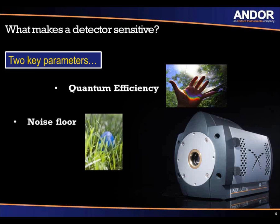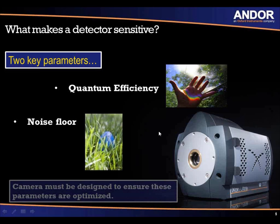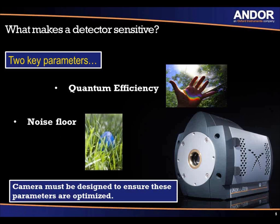The second parameter is the noise floor. An image showing a blue ball in grass depicts this concept — the grass represents the noise floor and the blue ball is your signal. You want to see the signal well above the noise floor. If you have high quantum efficiency and a very low noise floor, you have a very sensitive camera — one that has a high signal-to-noise ratio. Assuming both of these parameters are optimized, you will have a very sensitive detector.